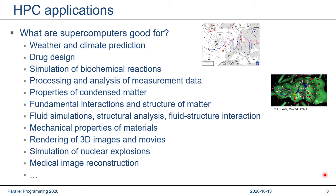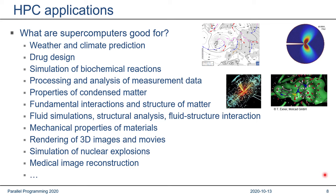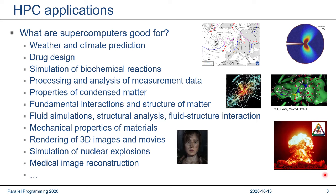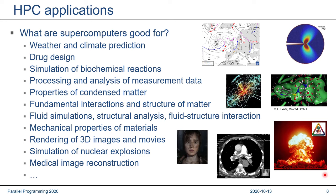Fundamental interactions and the structure of matter — for example, lattice QCD to explore the fundamental structure of matter — require a lot of computing power. Fluid simulation, structure analysis, fluid-structure interaction, and the mechanical properties of materials can also be studied using simulations. Let's not forget entertainment: rendering of 3D images for movies — in 1997, Titanic was reportedly the first movie where CGI scenes were rendered on a Linux cluster. Nuclear explosion simulation is another area — the American Department of Defense runs some of the fastest supercomputers in the world. Medical image reconstruction also relies on high-performance hardware to convert raw X-ray or MRI measurement data into images that doctors can read.